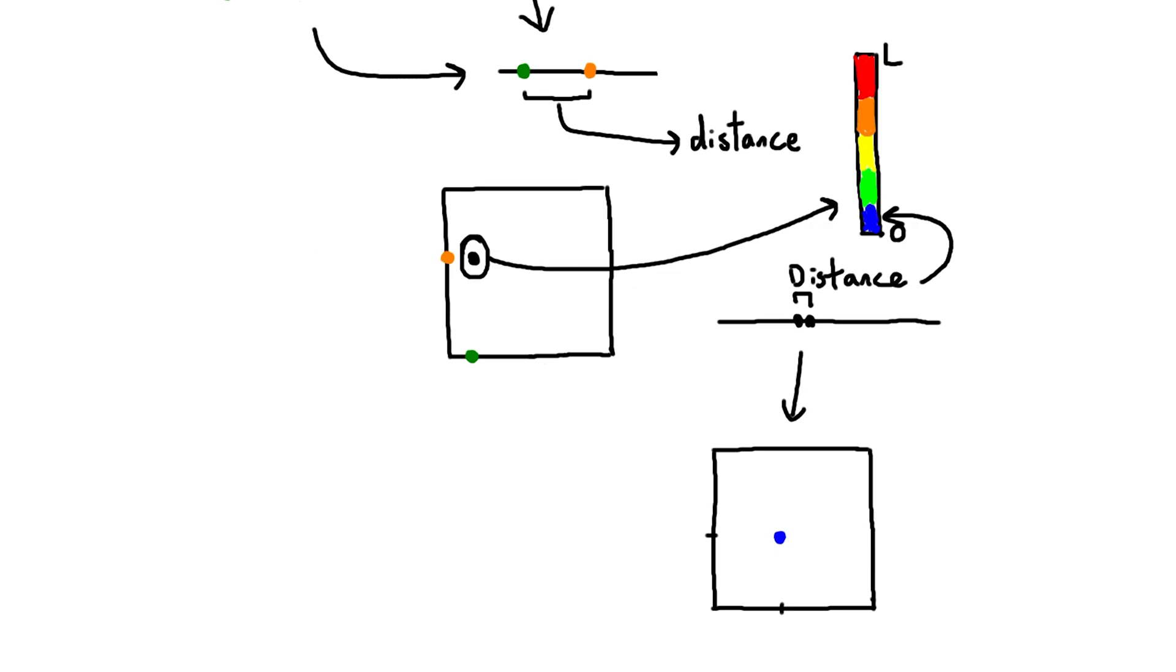our pair of points happen to be very close to each other, meaning a small distance. And you can see on our chart that a small distance means a blue color, so we went and colored that corresponding point in the square with blue.